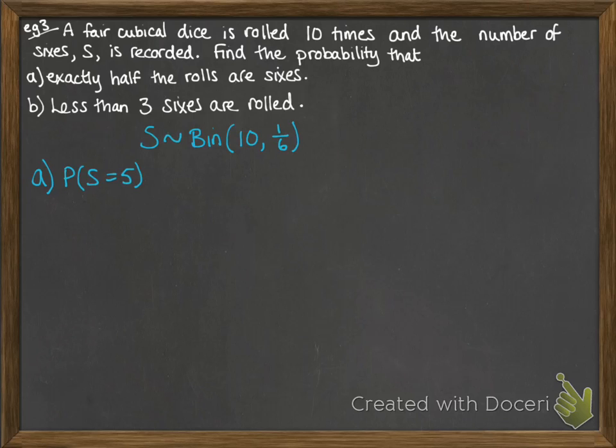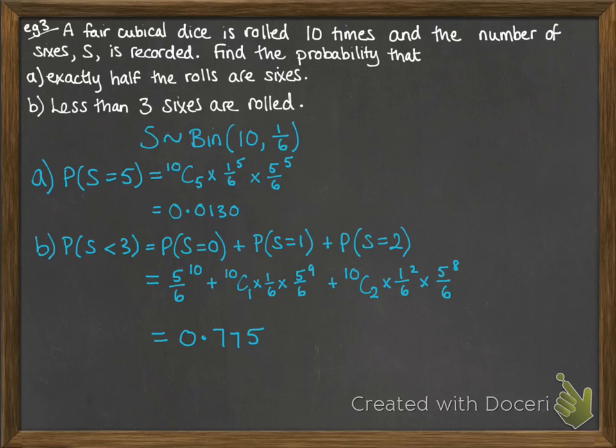So exactly half of the rolls are 6s. That means we would have five 6s. Put it into our formula. And here's our result. Less than three 6s would be the probability of no 6s plus 1 six plus 2 sixes. Pop them into our formula. Get the result.